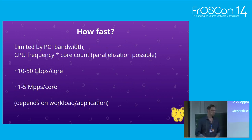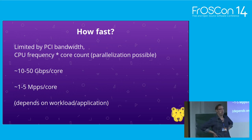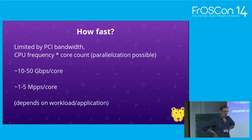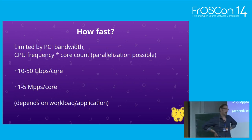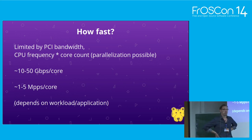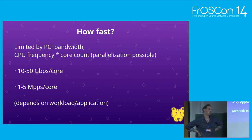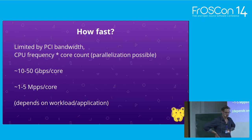What do I mean when I say fast? We are limited by PCI bandwidth, obviously. The limit you're more likely to hit is CPU frequency times core count — and chances are your problem is parallelizable. In practice, you can expect throughputs of 10 to 50 gigabits per core on a modern CPU, or 1 to 5 million packets per second per core, depending on your workload.